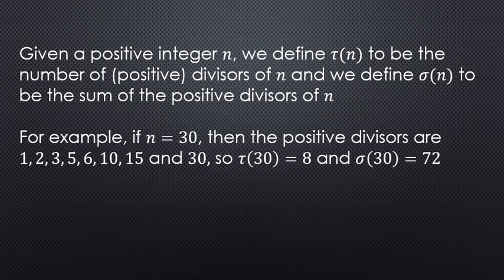For example, if n is 30, then we can list out all the positive factors of 30: 1, 2, 3, 5, 6, 10, 15, and 30. So how many do we have? We have 8. So that's τ(30). And then σ(30), if you add all these numbers up, you would get 72. So it's really easy to do for low values of n.